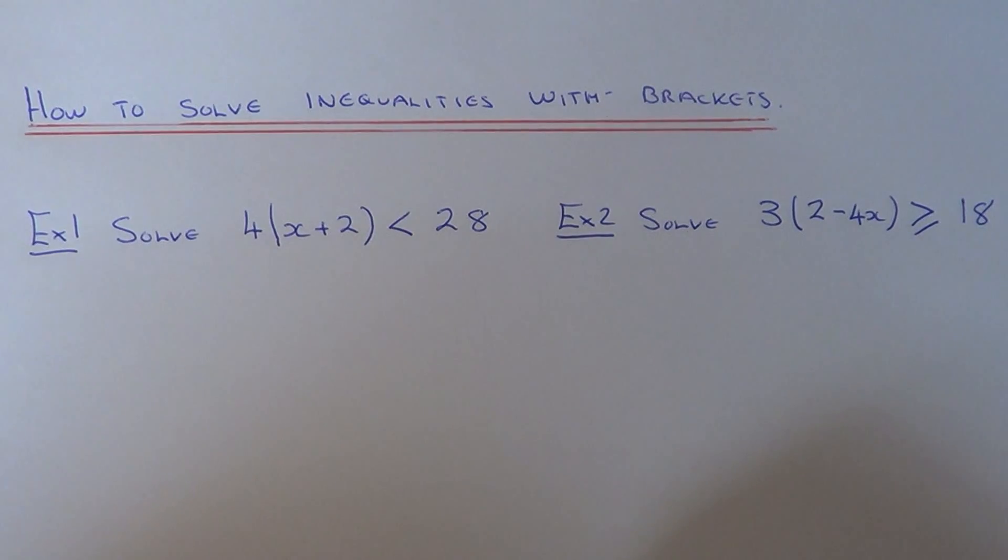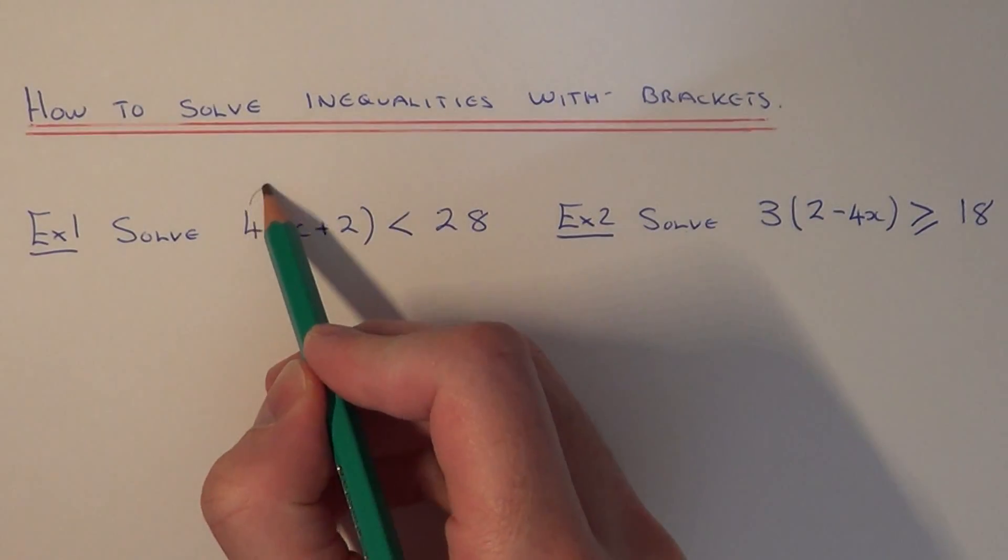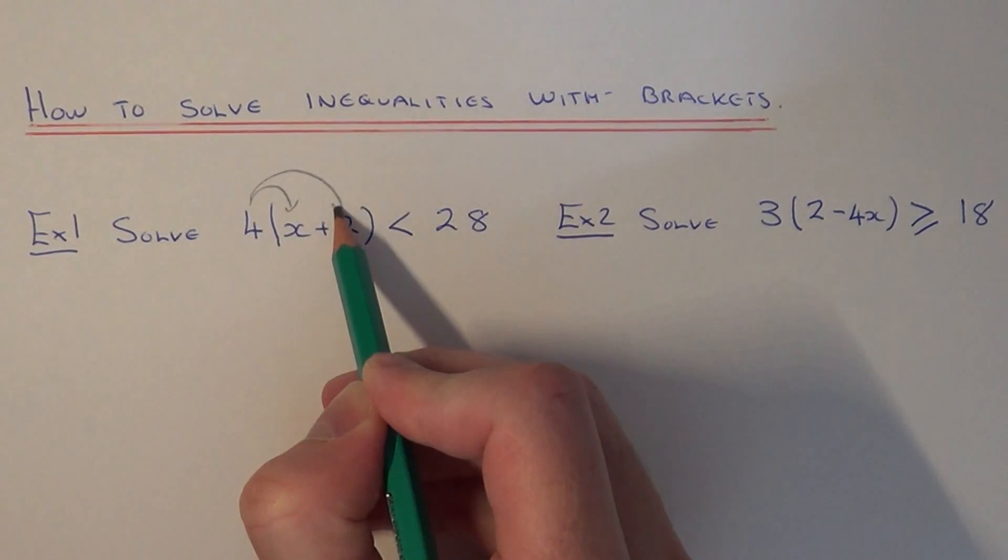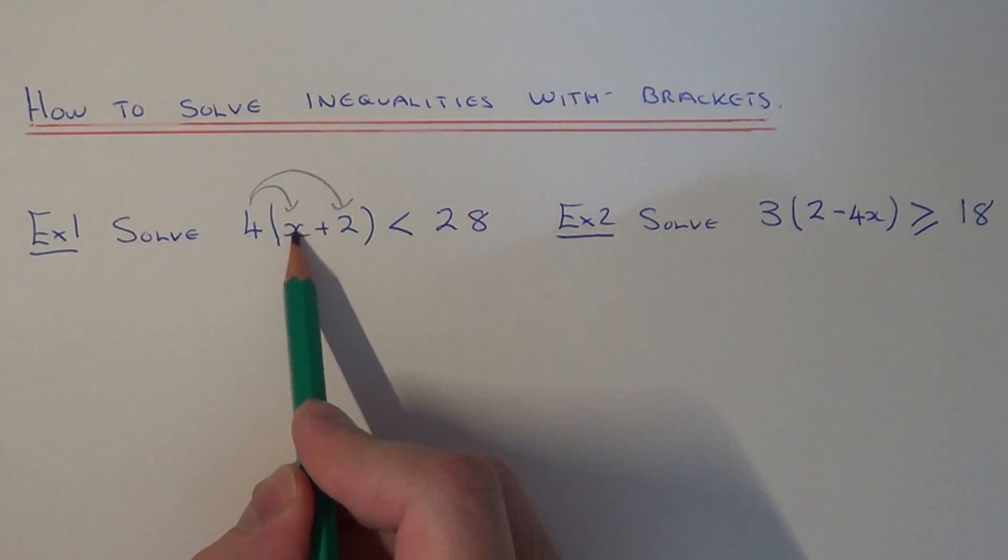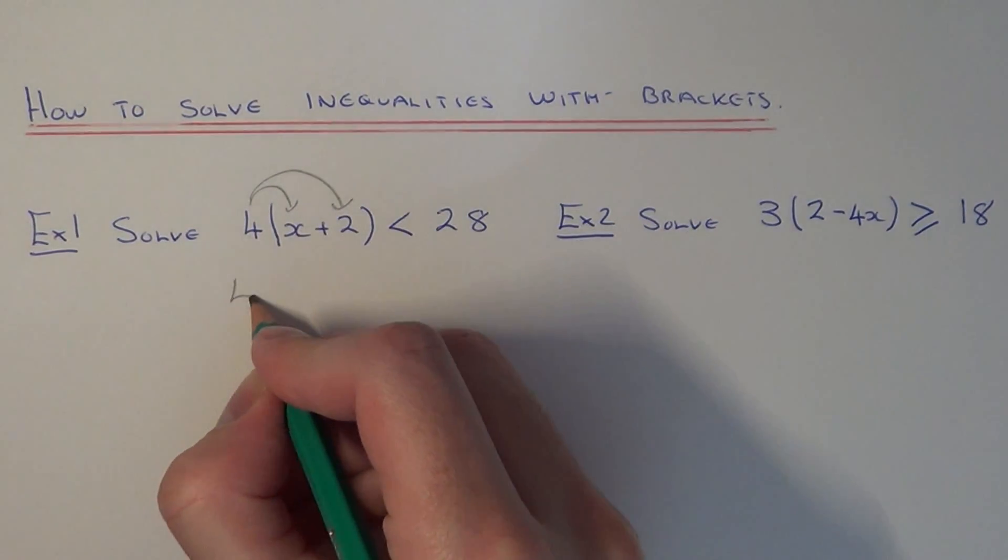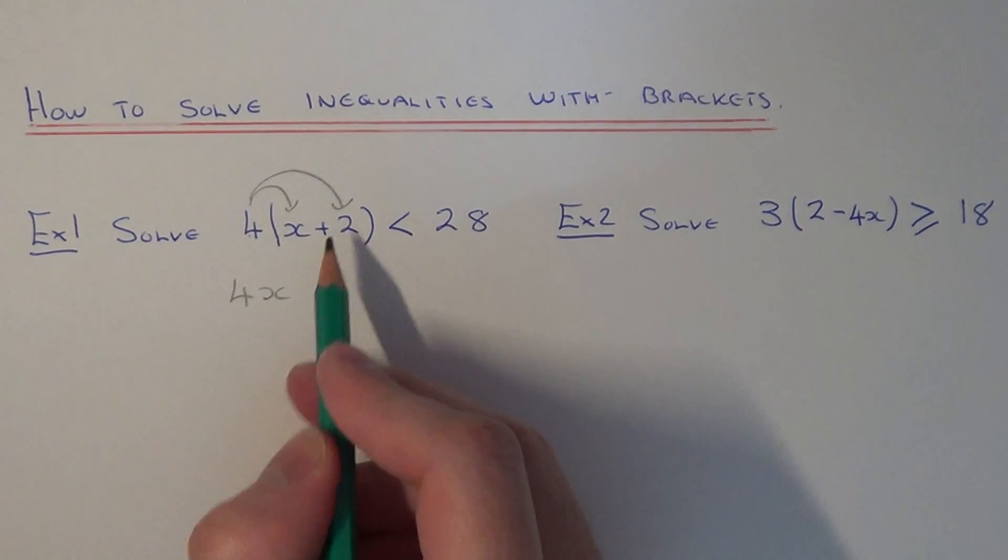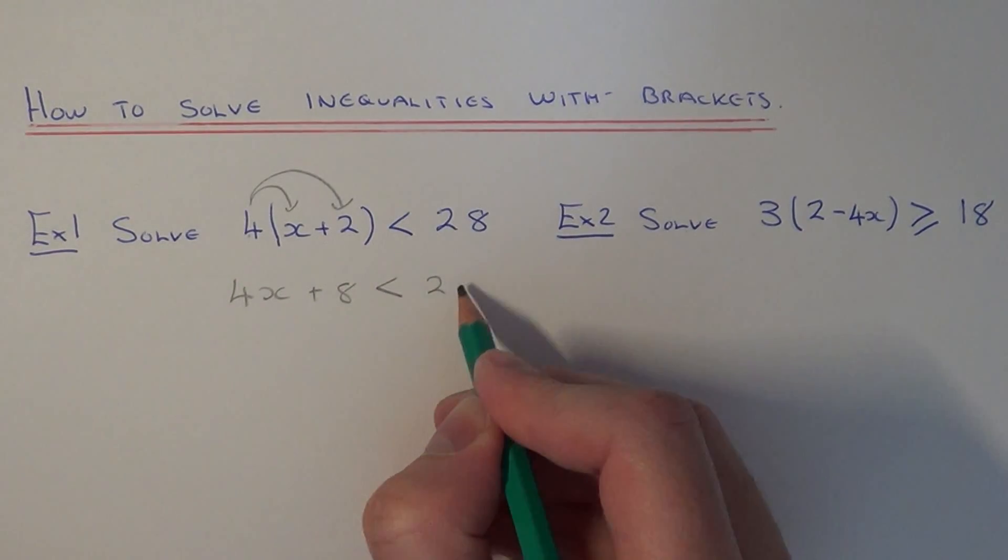So let's have a look at example one. We need to solve the inequality 4 bracket x plus 2 is less than 28. So the first thing to do is to multiply out the brackets on the left hand side. So 4 times x is 4x, 4 times 2 is 8, and that will be less than 28.